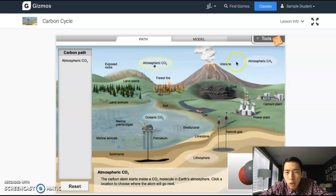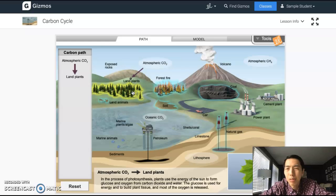You cannot click wherever you want—you can only click the things that are kind of flashing in blue. Okay, so I've got three options right now. There's oceanic CO2, so in the ocean, there's land plants, and there's exposed rocks. Okay, so I'll just click on land plants.